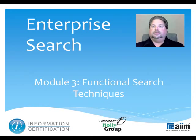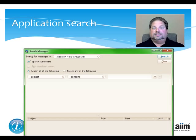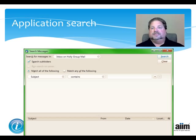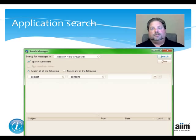For 60 years, AIM has been the leading nonprofit association, helping users understand how to best manage documents, content, records, and business processes. Application Search refers to the search function that comes built into particular applications, like email, repositories like records management, or systems like desktop search. For example, this slide shows the search that lives inside of Mozilla Thunderbird. When you search within an application, you're only searching the information that's managed by that particular tool.